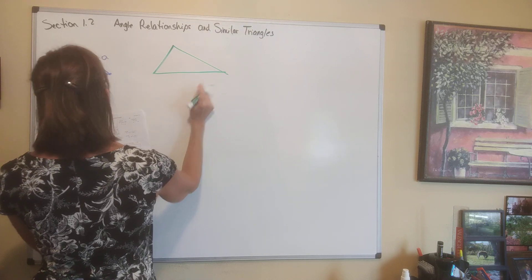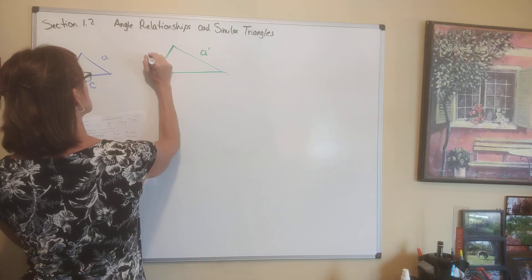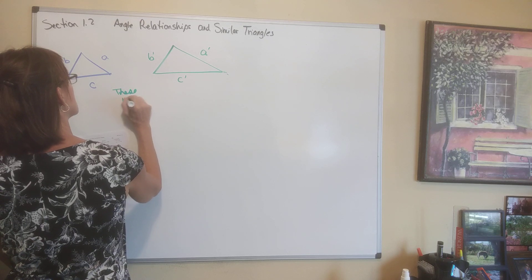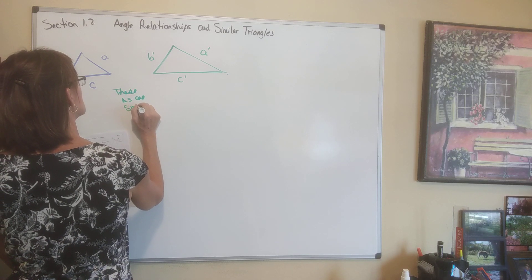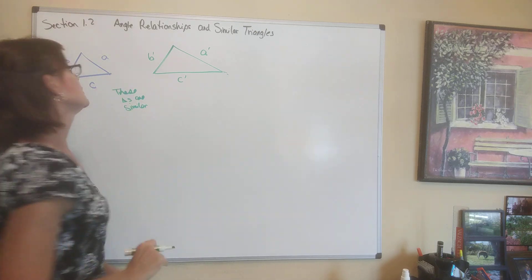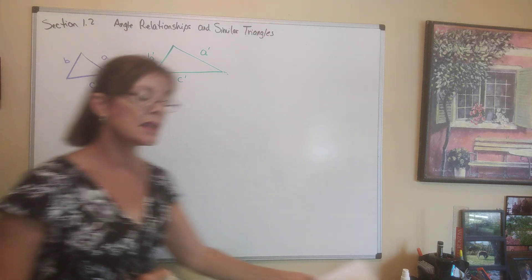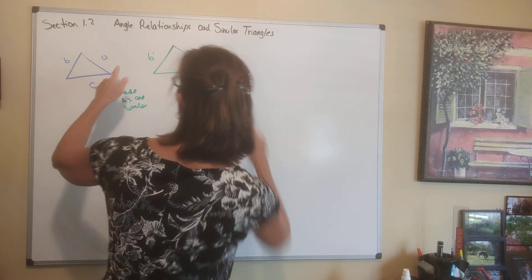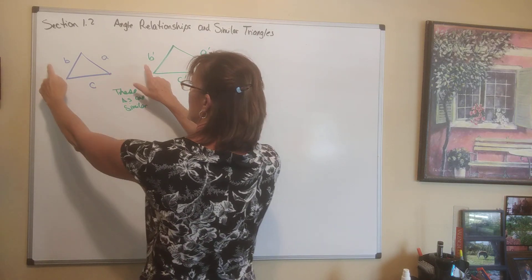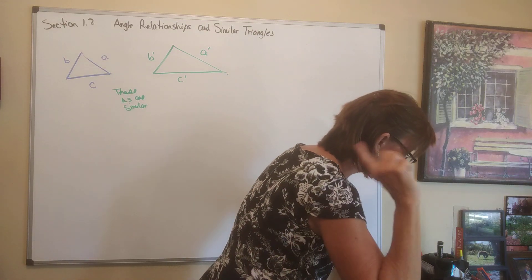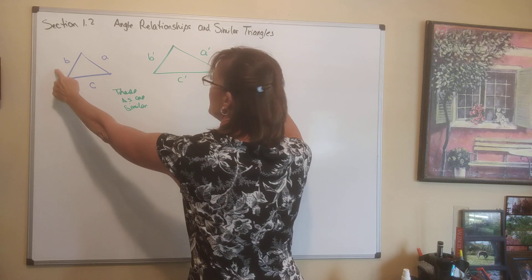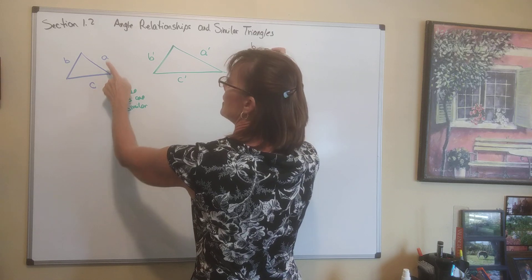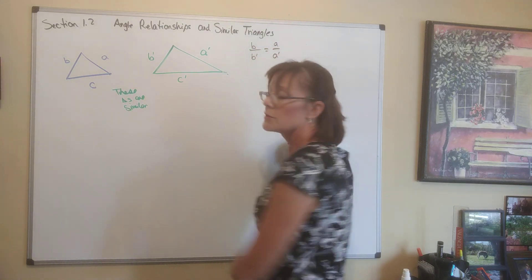We'll pretend these are similar figures. If we know that two triangles are similar, then we can write true statements. The corresponding sides are labeled A and A prime, B and B prime, C and C prime. So here are some true statements: B is to B prime as A is to A prime.